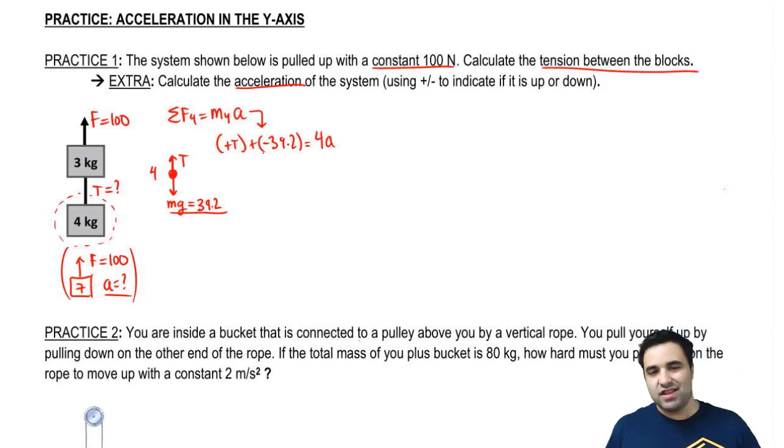So if you look at this equation, there's nothing else I can do here. I have two unknowns. Tension is what I want to find in the end, but I need to know A first. So I'm stuck, which means that I'm going to have to write F equals MA for a second object over here.